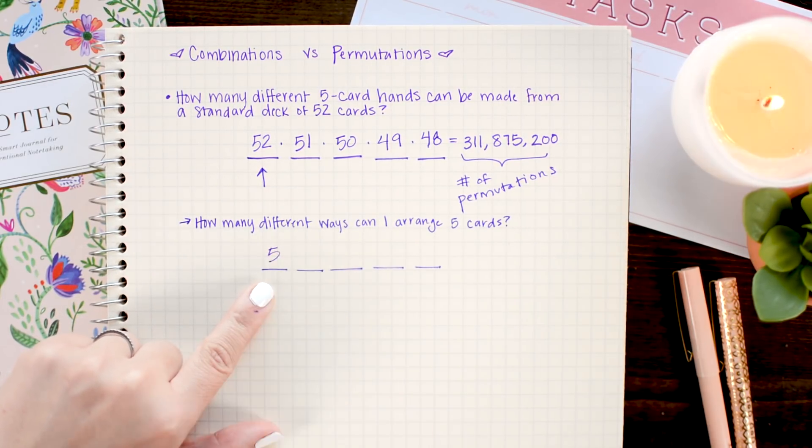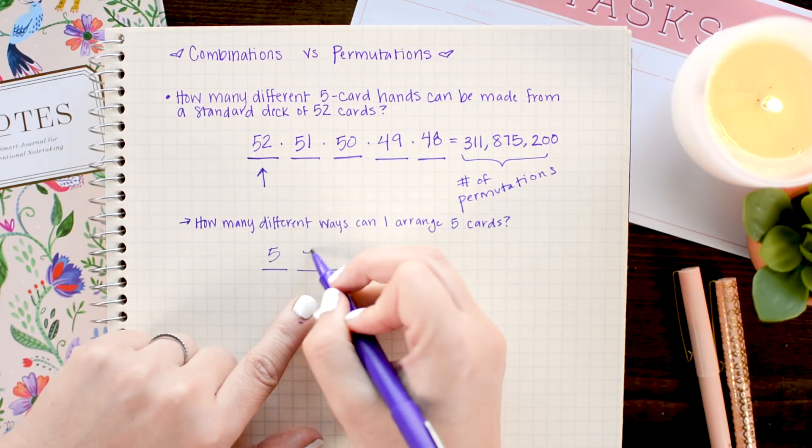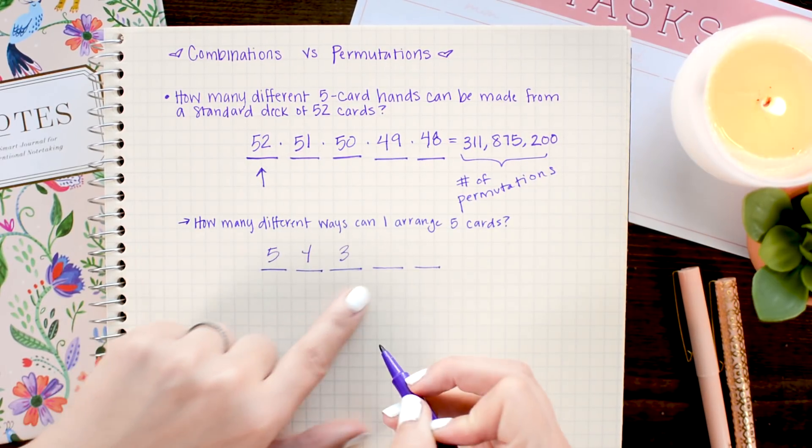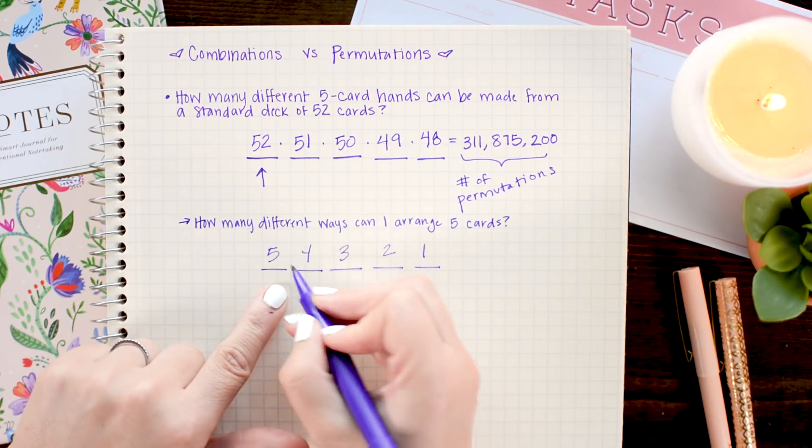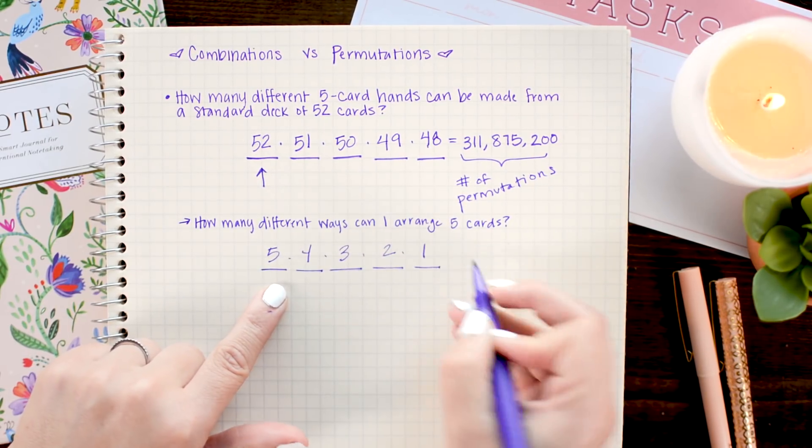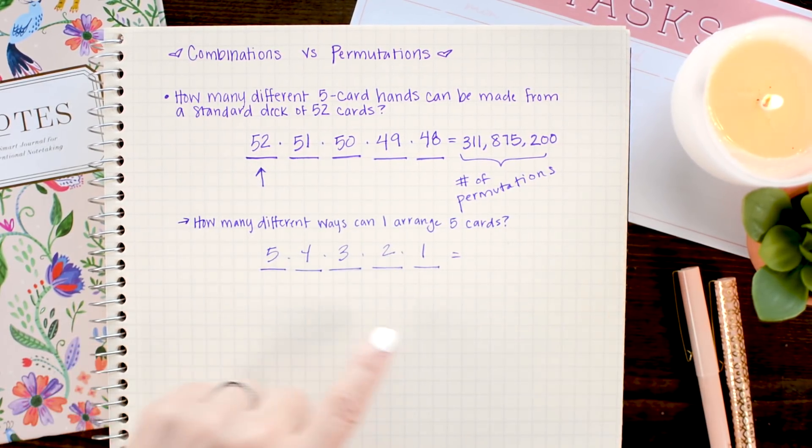So, I have five options for the first card, four options for the second, three, two, one, just like we did up here. And I'm going to multiply these together to get 120.